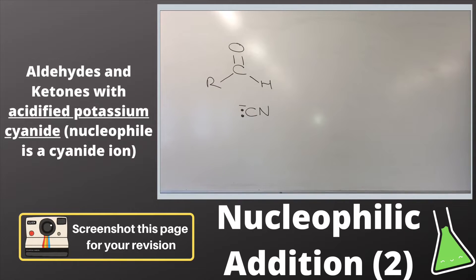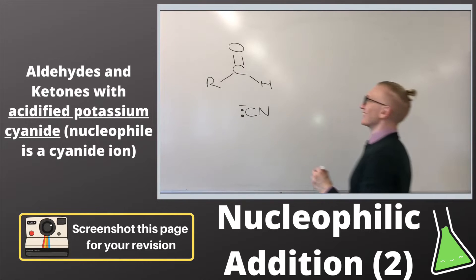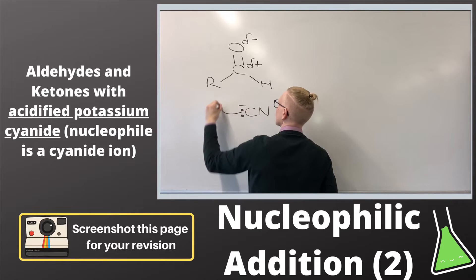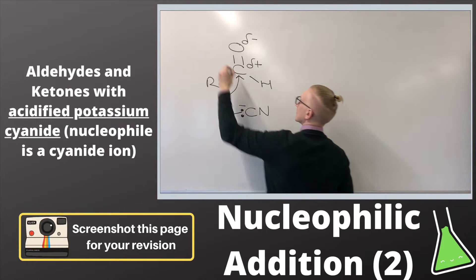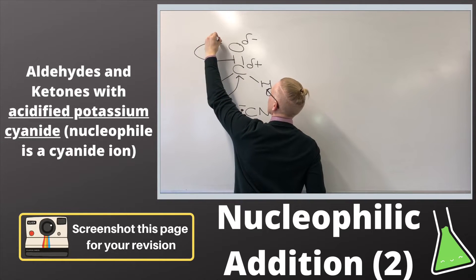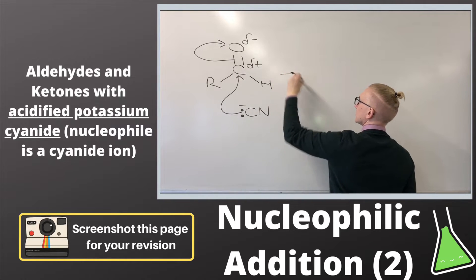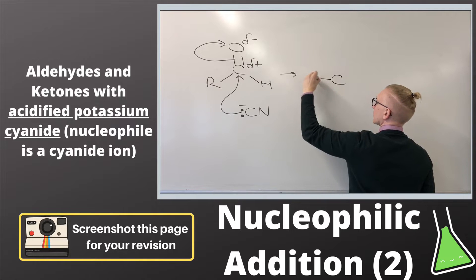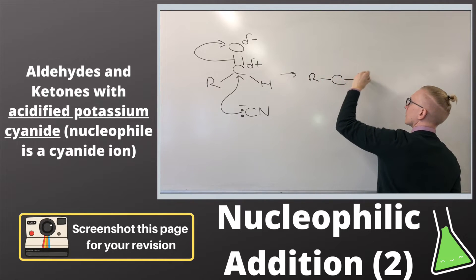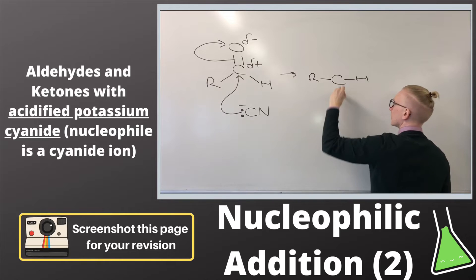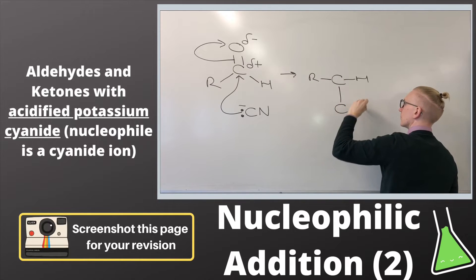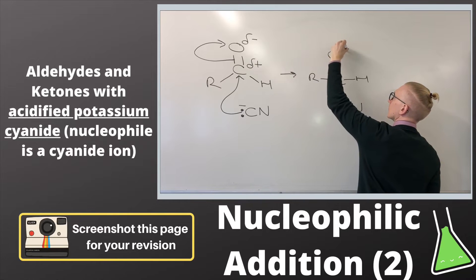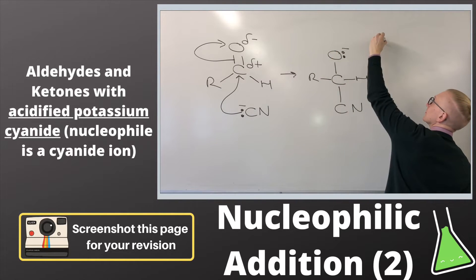Here is the second example of the nucleophilic addition mechanism. This time we're using acidified potassium cyanide, which provides us with a cyanide ion instead of the hydride ion we saw last time. It's still aldehydes and ketones and it's still nucleophilic addition, but the intermediate step doesn't use H₂O — instead we use the H⁺ ion provided by the acidic conditions. There's also only one product at the end of this mechanism; we don't have the OH⁻ that we saw at the end of the last one.